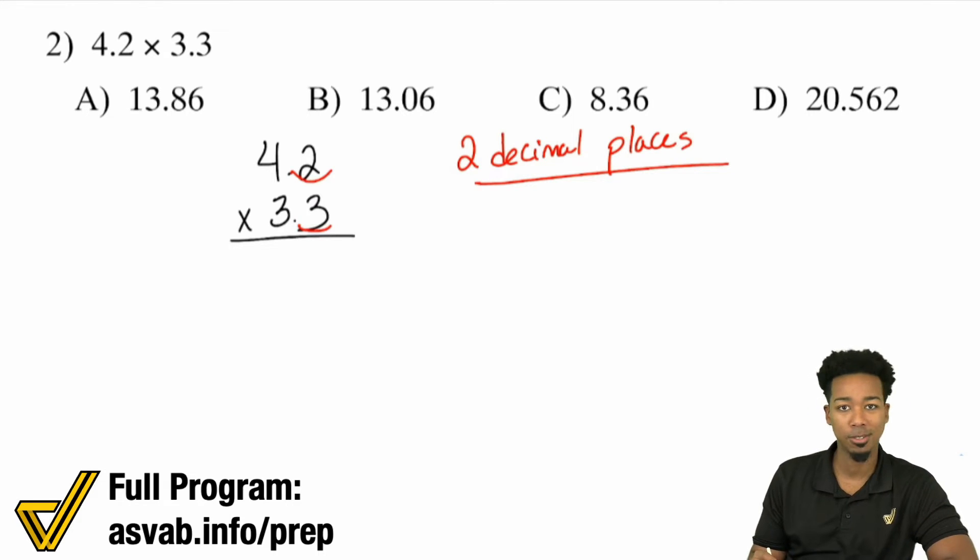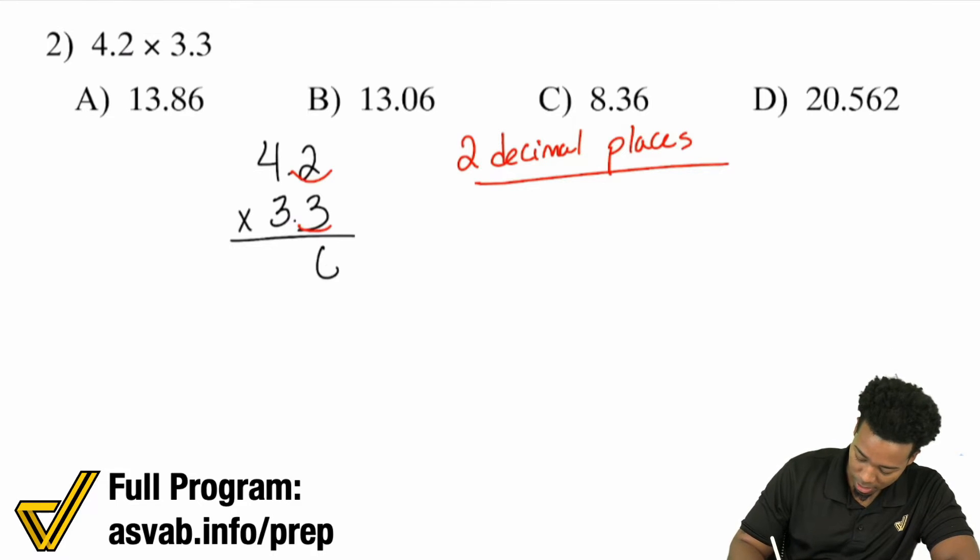And that's for multiplying decimals. For dividing in the next video, there's a slightly different thing that you have to do to make sure that you're clear every single time. Let's get into it. Two times three is 6, four times three is 12. Bring the zero down. Then two times three is 6, four times three is 12.